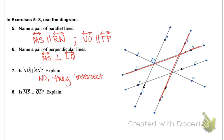And lastly is MS perpendicular to QL. And they are marked right there. And it says that they are. So our answer is yes, because of the angle marking that's given there. It states that it is perpendicular to 90 degrees.